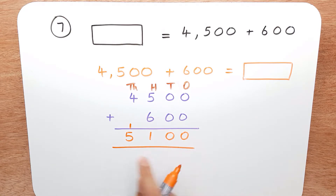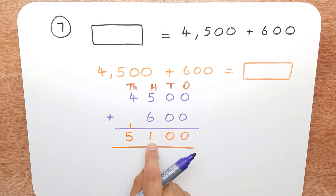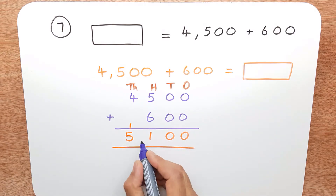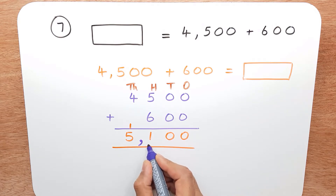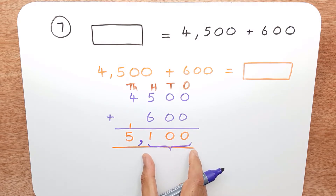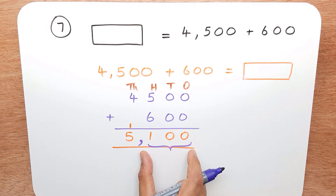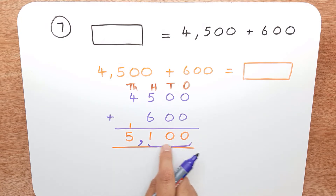And this is our answer. One, two, three — comma. This here you look upon as your thousands. So it'll be five thousand one hundred.